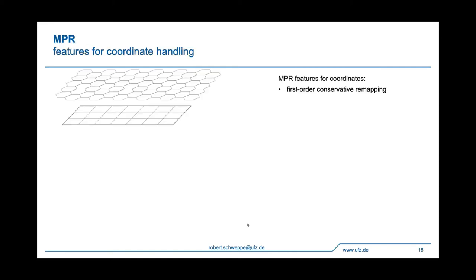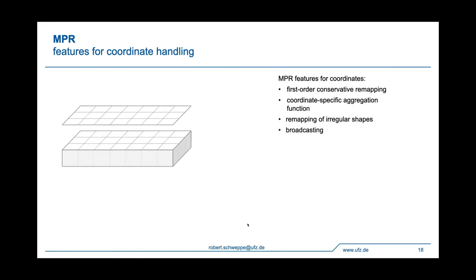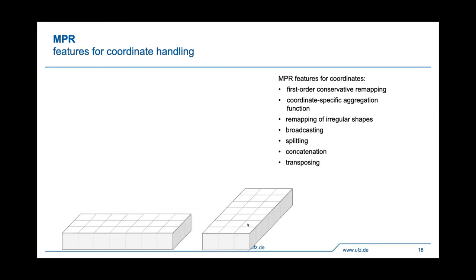Some features of the current implementation as it is now in an almost final state. We have implemented a first order conservative remapping scheme for different types of grids. This mostly concerns at least two dimensional grids. We have also implemented a coordinate specific aggregation function so that you're flexible in having different aggregation schemes over, for example, spatial and horizontal and vertical dimensions. We also have a remapping irregular shapes as you see here. Then again, some basic array multiplications like broadcasting and splitting, concatenation and transposing.